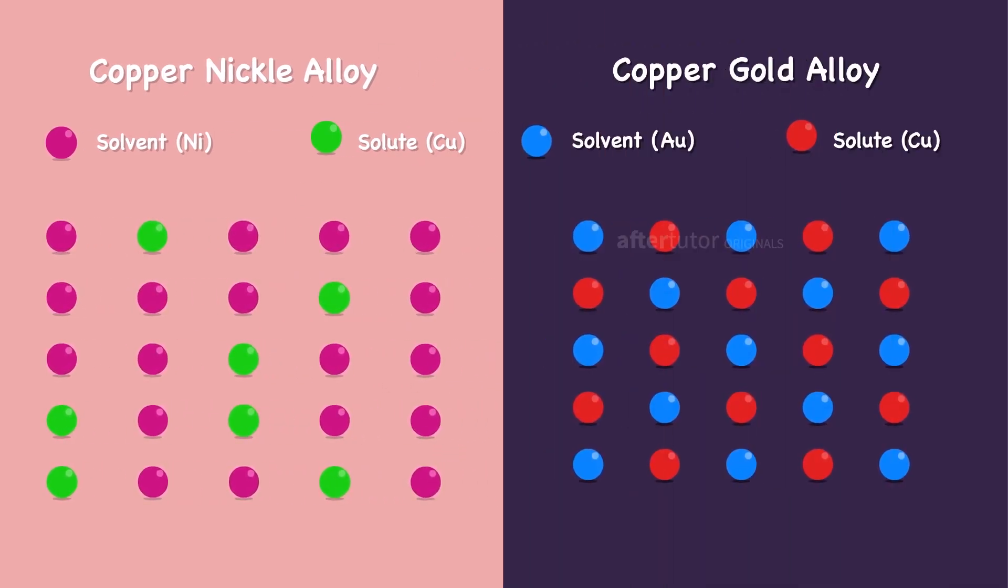It can be arranged in two forms: random, and for ordered arrangement, copper-gold alloy.